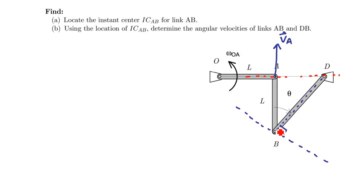And if I draw a line that's perpendicular to the velocity of point B, I'm going to get an intersection right here, right back at point D. And so point D is not only going to be point D, but point D is also going to be the instantaneous center of link AB.